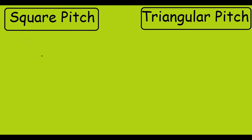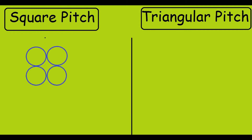First, let's see the diagram for the square pitch. In square pitch, the tubes are arranged in such a way that we can draw a square through the center of each of these circles. This is how the square pitch looks like.